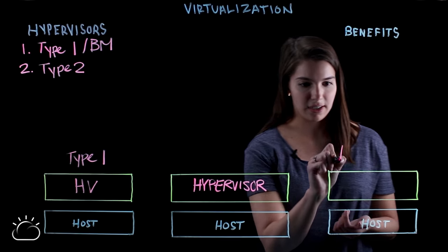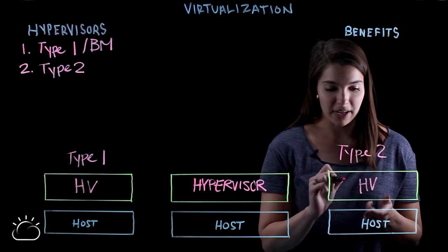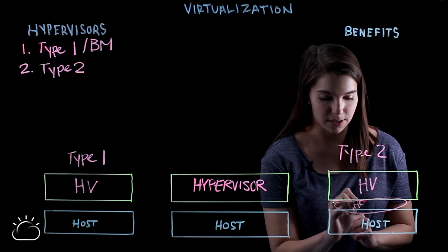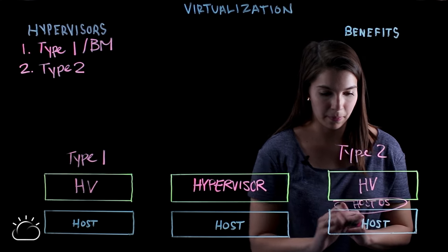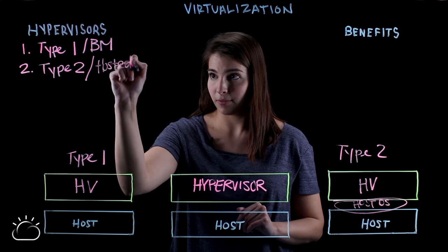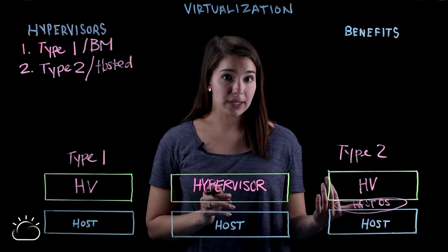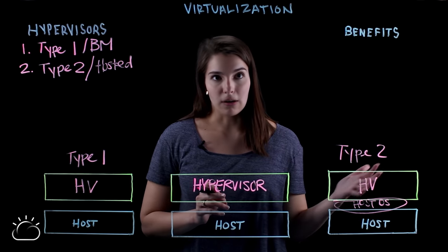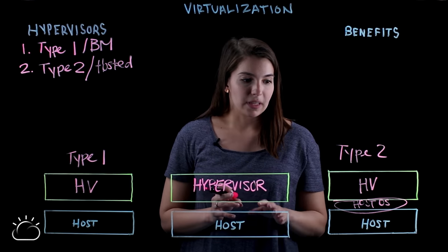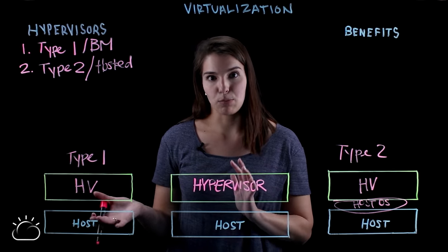The other type of hypervisor is a type 2 hypervisor, and what makes these different is that there is a layer of host OS that sits between the physical server and the hypervisor. By that nature, they are also called hosted. These are a lot less frequent — they're mostly used for end-user virtualization. Some examples in the market include Oracle VirtualBox or VMware Workstation. They have a higher latency than a type 1 hypervisor.